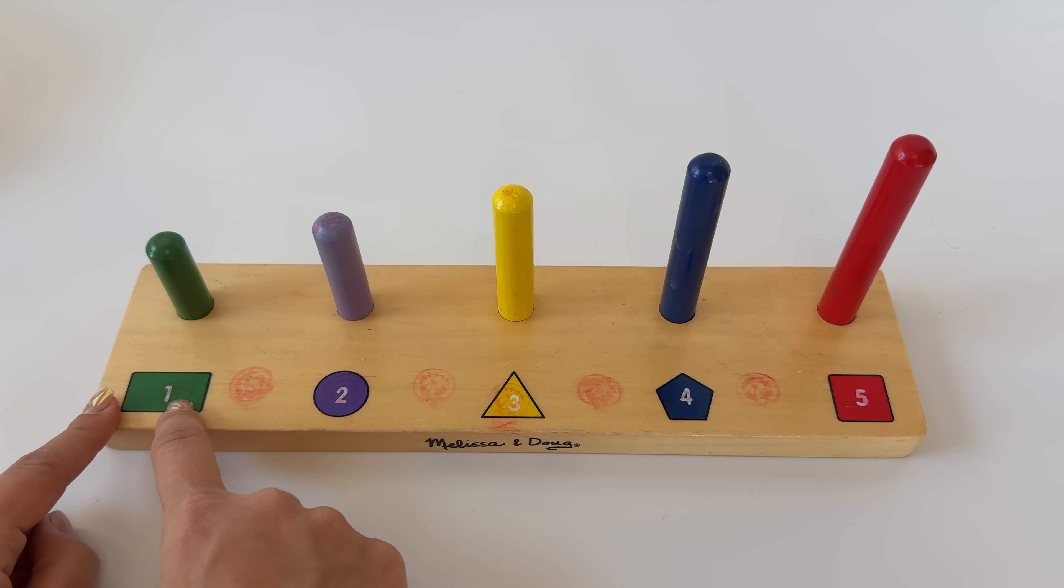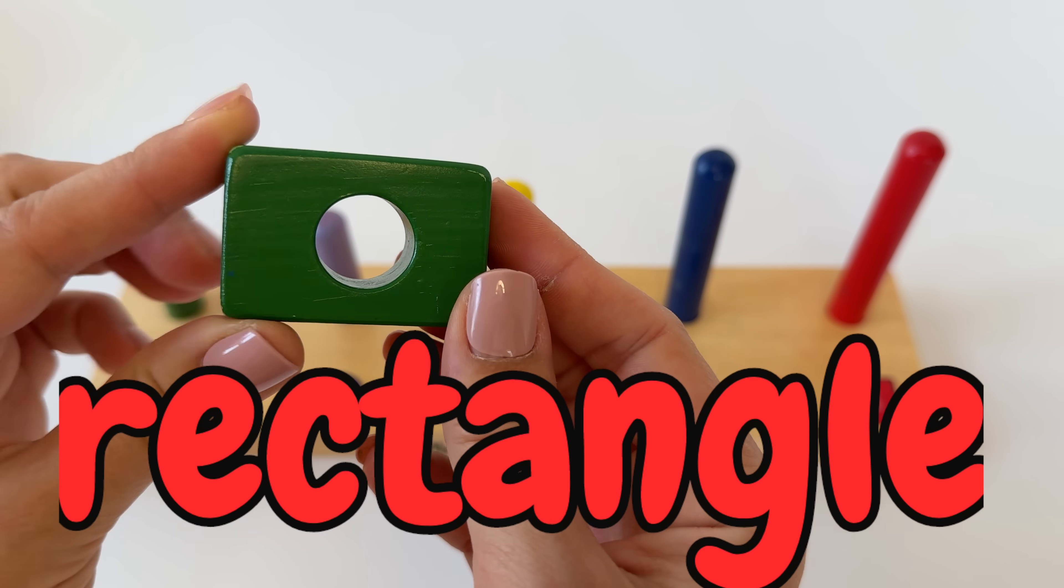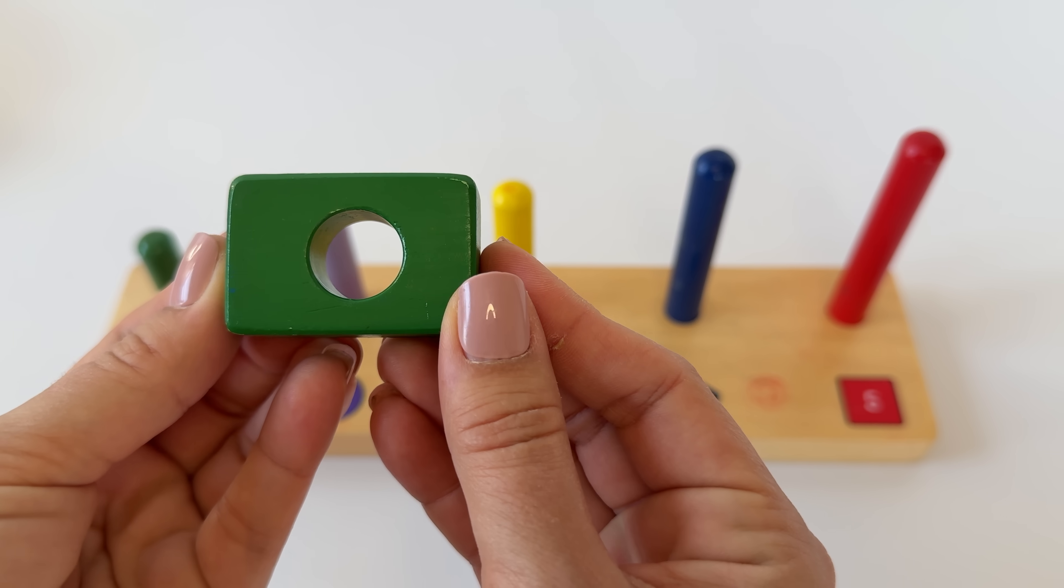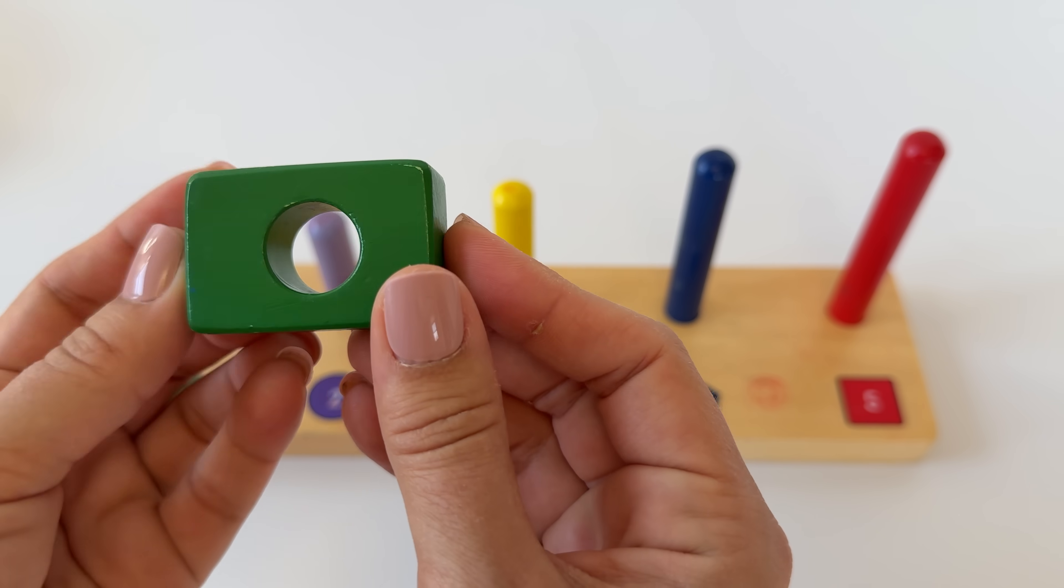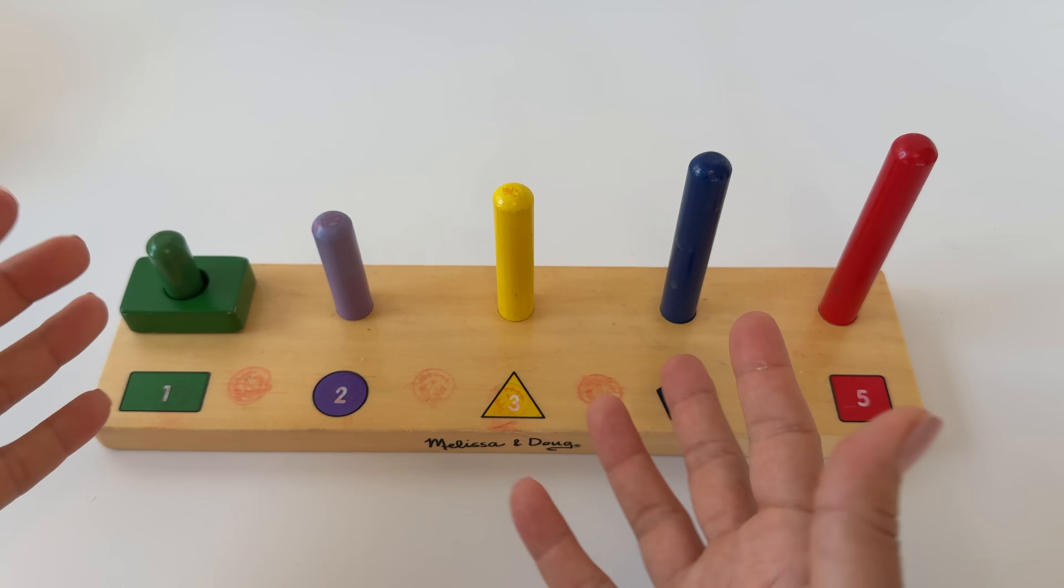And let's see, it looks like a green rectangle. Here's a green rectangle. Rectangle. Say rectangle. Great! Let's put the green rectangle on the rod. Yeah!